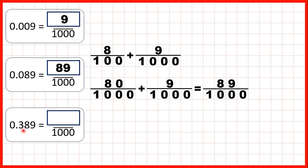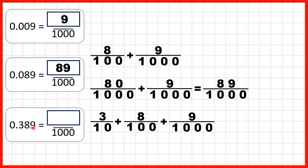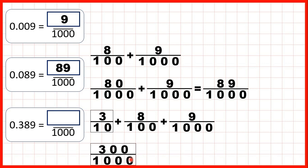Now let's take a closer look at 0.389. We have zero in our ones, then three in our tenths, eight in our hundredths, and nine in our thousandths. Three tenths is the same as 300 thousandths, because 10 times 100 is 1000, and what we do to the denominator we do to the numerator — three times 100 is 300.